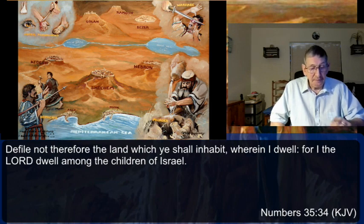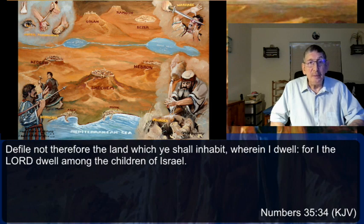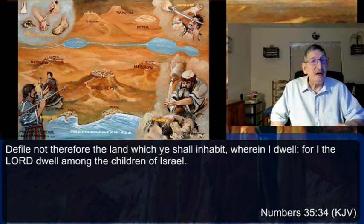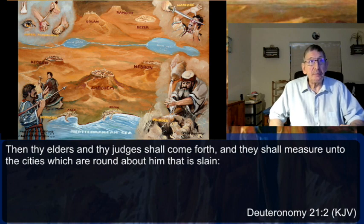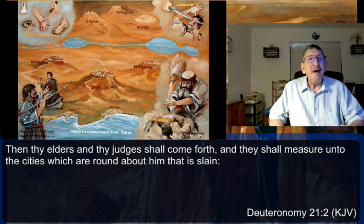Therefore if there is a murder unavenged, some kind of cleansing is necessary so the land will not be defiled. This reminded me of going all the way back to Cain and Abel, when God said 'I see your brother's blood crying to me out of the land.' Then the elders and the judges shall come forth and measure unto the cities which are round about the slain — trying to find the closest city.